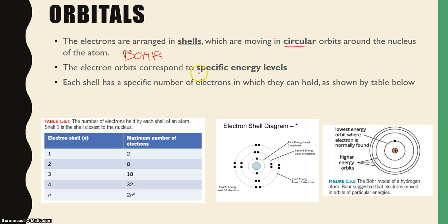These electrons correspond to specific energy levels. The inner part here, that's the first energy level. Then this one is the second energy level and this is the third. The core or the inner parts are the lower energy levels and the outside is the higher energy levels.